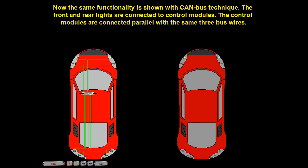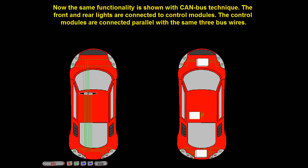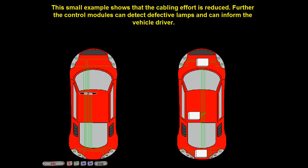Now the same functionality is shown with CAN-BUS technique. The front and rear lights are connected to control modules, which are connected in parallel with the same three bus wires. This small example shows that the cabling effort is reduced. Further, the control modules can detect defective lamps and can inform the vehicle driver.